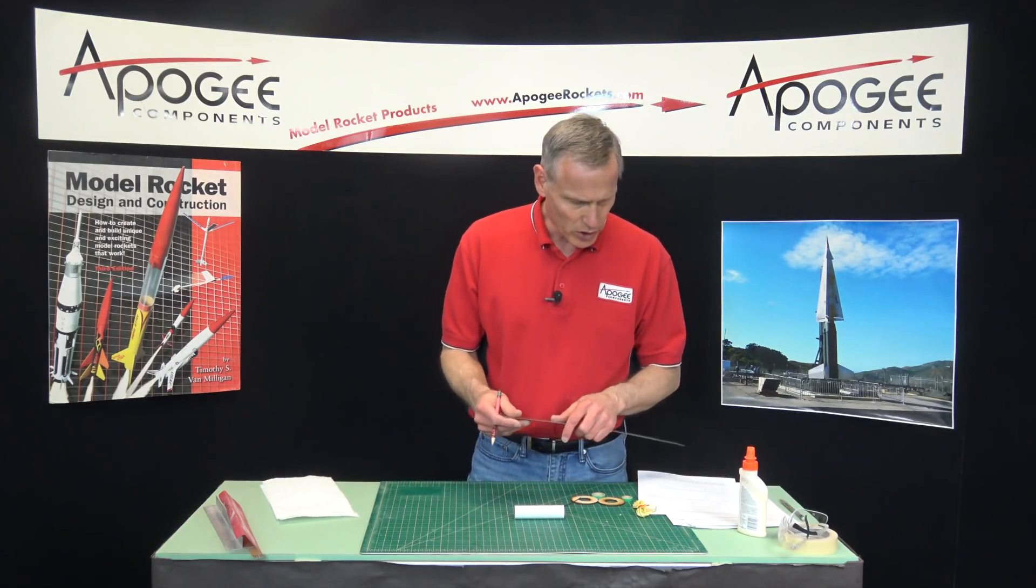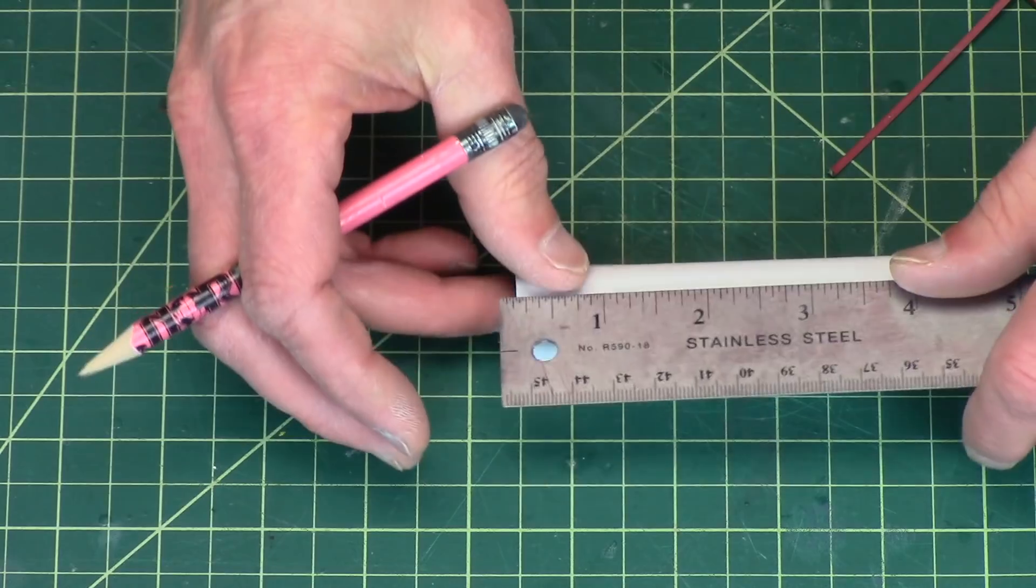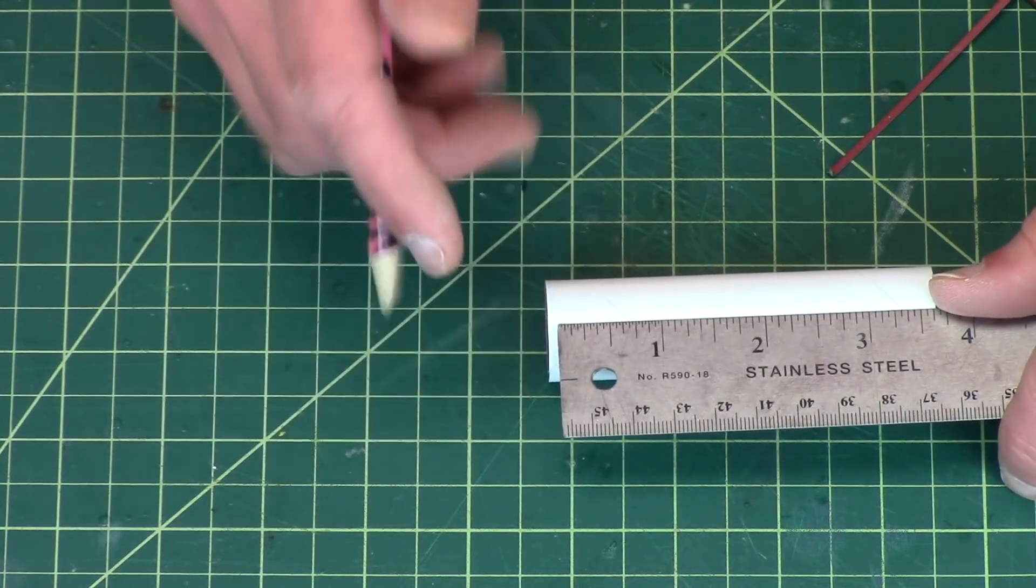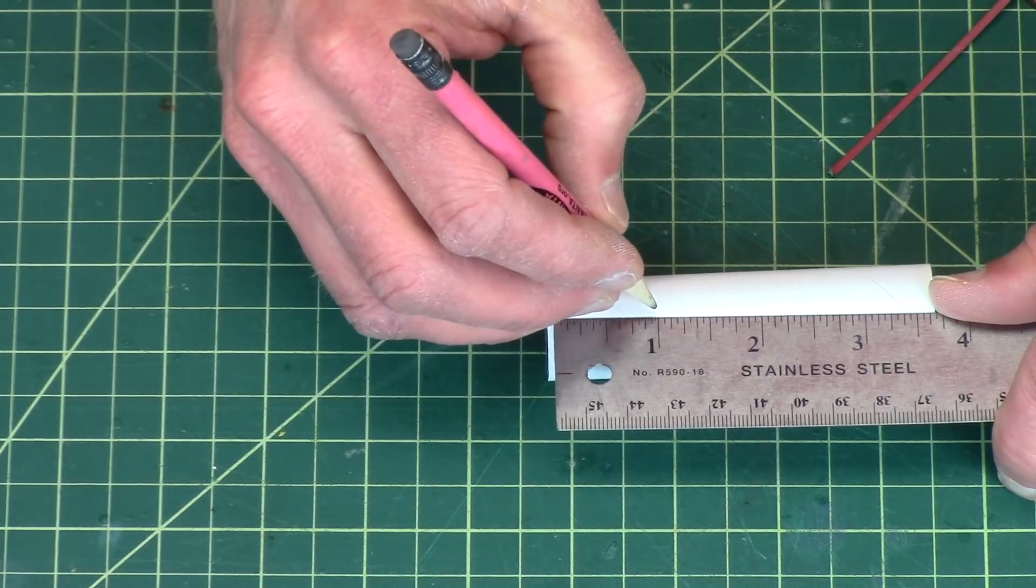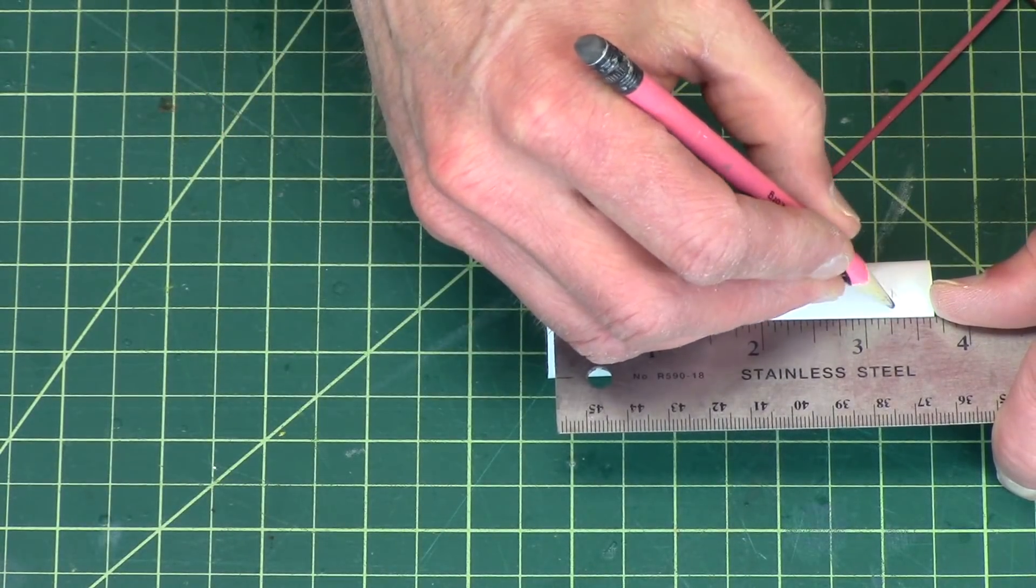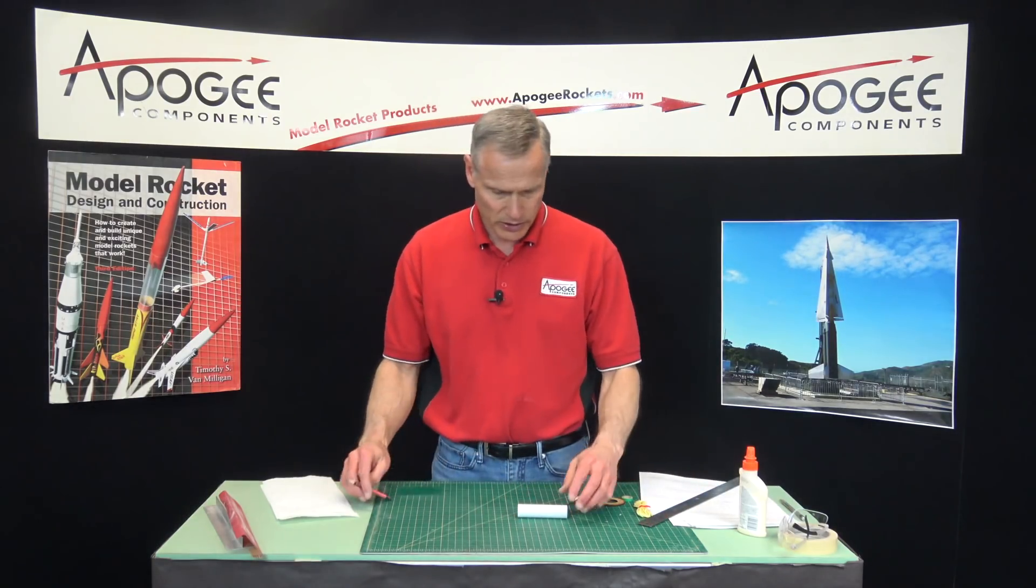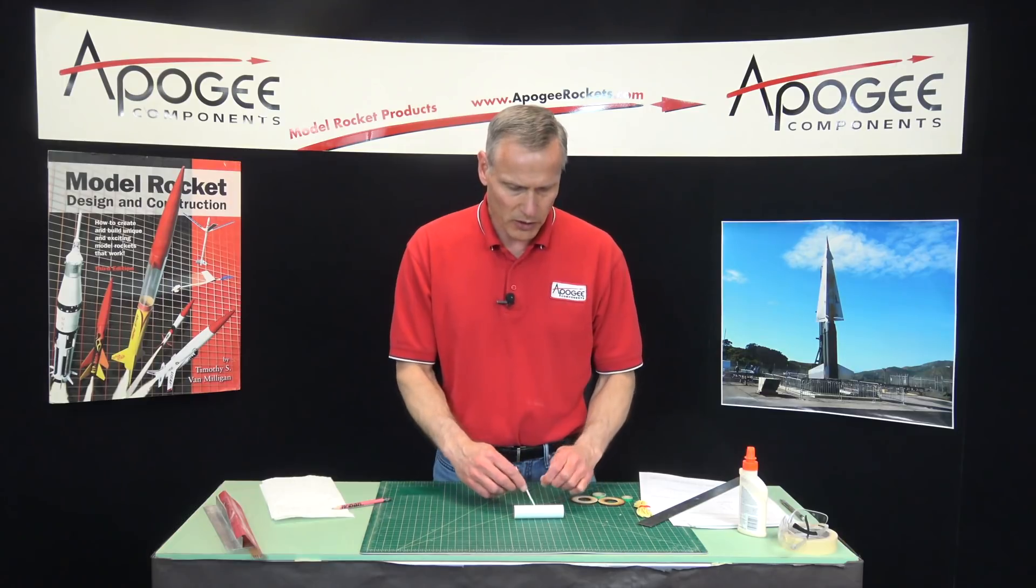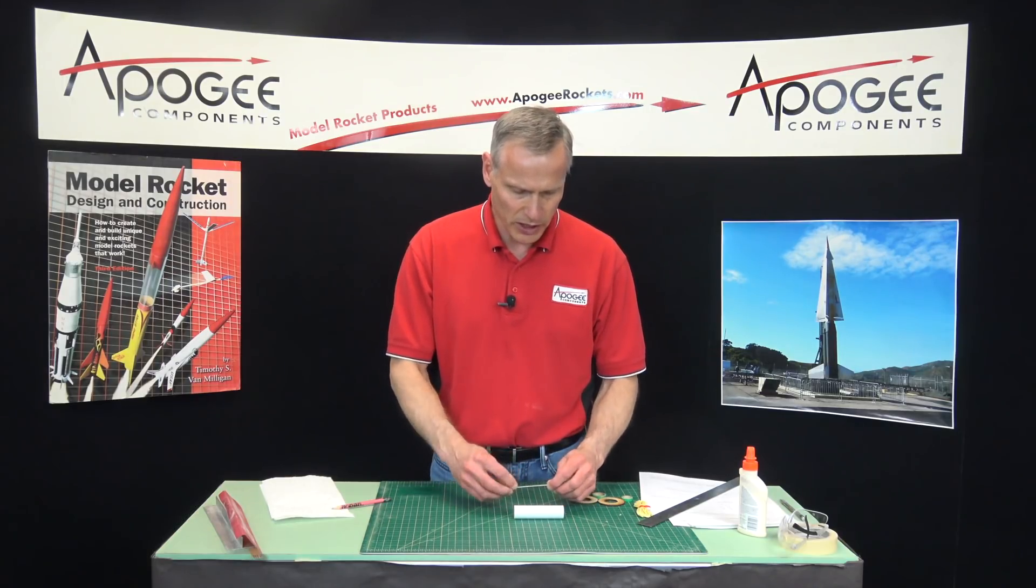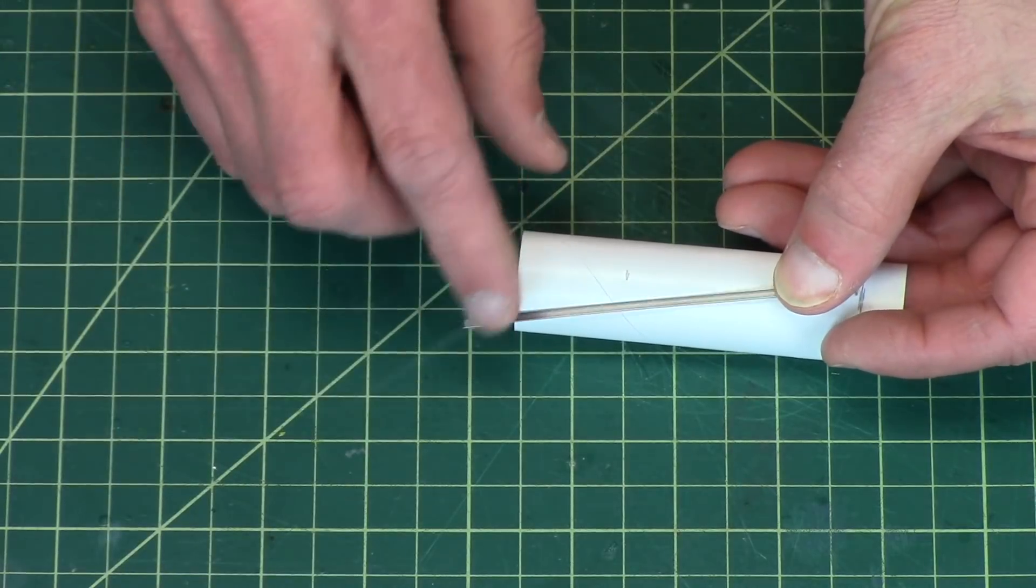The first step is to mark the tube, and we want one inch from one end and then 3.25 inches from that same end. So here's the first one right here and the second one, and you don't have to be too exact. When I design the kit, I always try to design it so that there's one inch from the end of the tube.